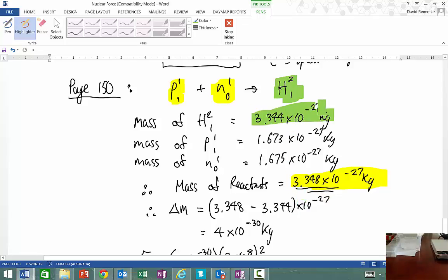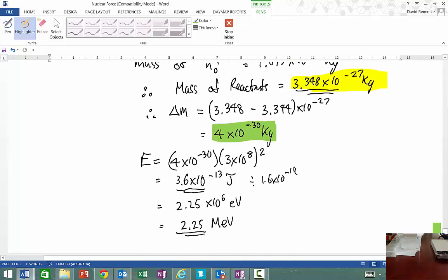The difference between those two things, when we do our reactants minus our products, if we get a positive value there, that means we're actually getting energy out. There's a mass defect because the mass of our reactants is more than the mass of our products. So there's a loss of mass. That loss of mass is, in fact, energy.